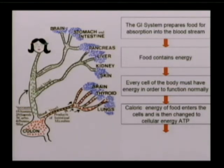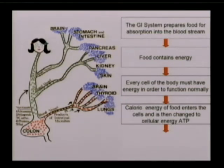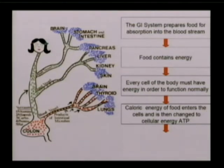Food contains caloric energy that enters the cell and is changed to something called ATP — Elaine used to call it 'all that power' — but it's adenosine triphosphate. It's the power that runs the organs. So it's important to remember that without the absorption of food, organs starve and metabolic pathways malfunction.